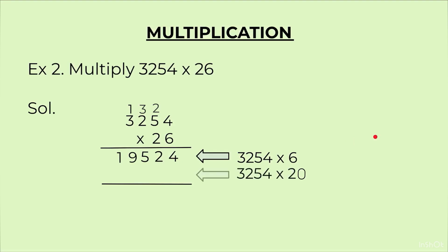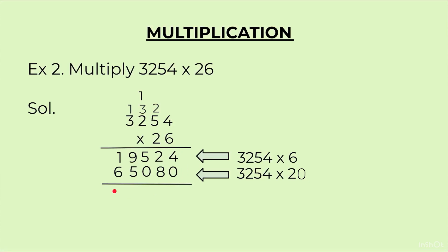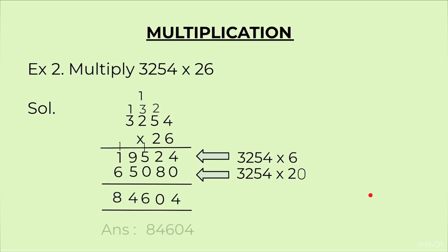In the second line we multiply 3254 × 20. Since 20 has one zero, we put one zero first. Then: 2 × 4 = 8. 5 × 2 = 10, carry 1, write 0. 2 twos are 4, plus 1 is 5. 3 twos are 6. Now we add the two numbers: 4+0=4, 8+2=10, 5+1=6, 9+5=14, carry 1, 6+1=7, plus 1 is 8. The answer is 84,604.